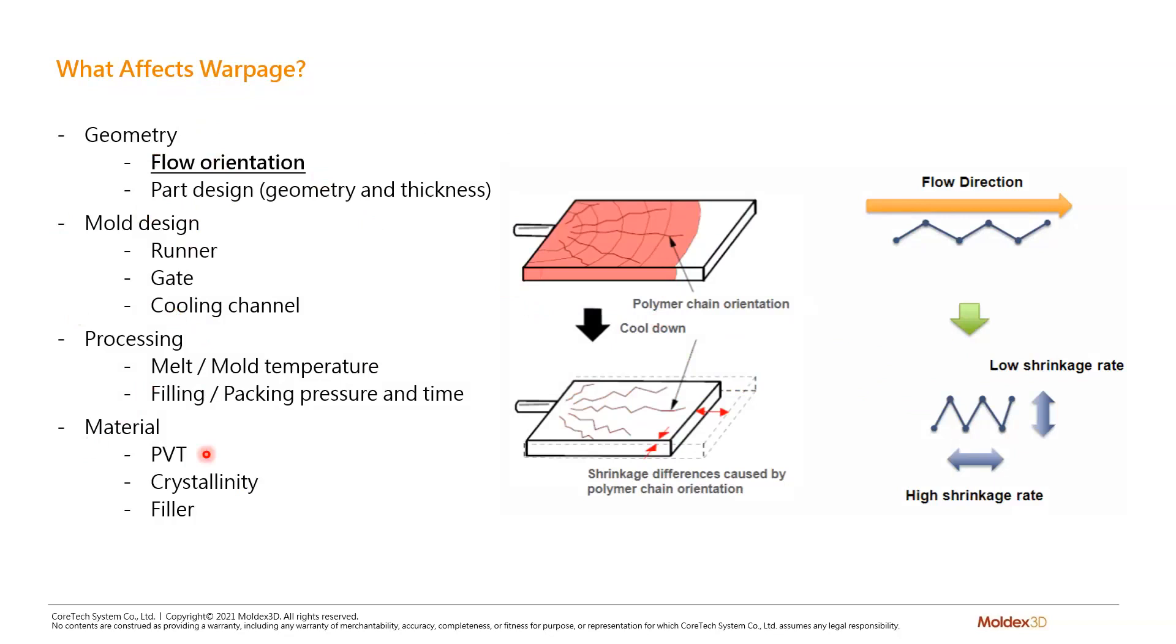Firstly, let me go into some more detail about flow orientation. As you can see, when the plastic flows to the right side, the polymer chains are stretched. And when the polymers are stretched more on the flow direction, the shrinkage is greater on the flow direction.